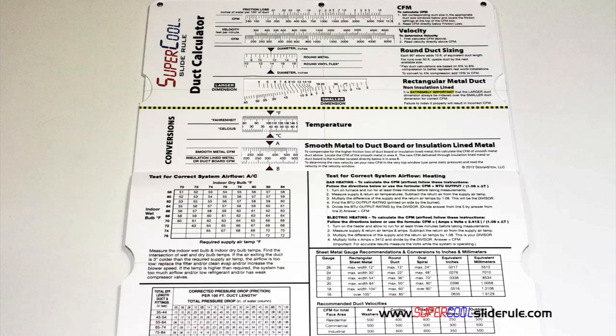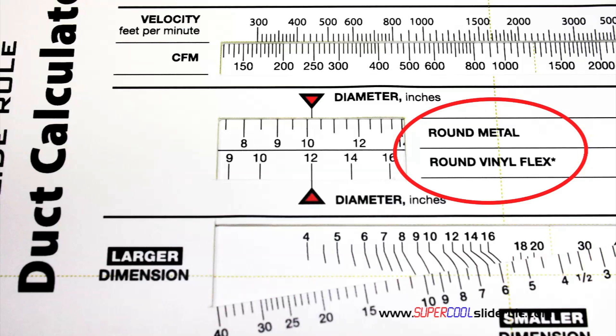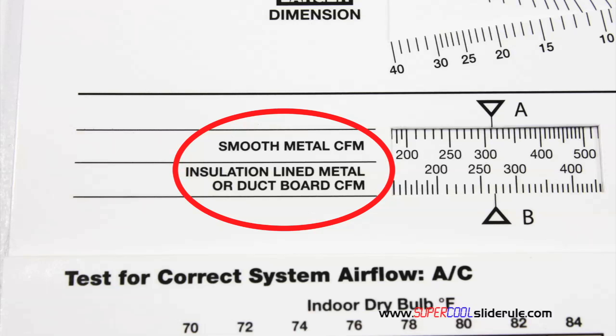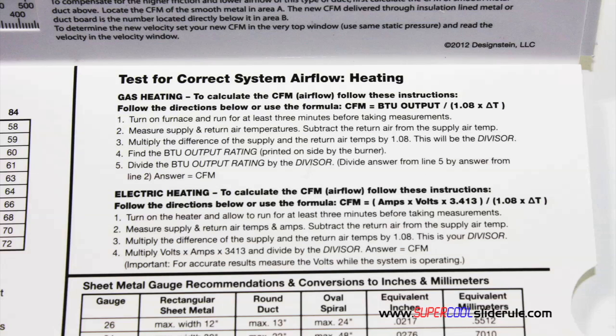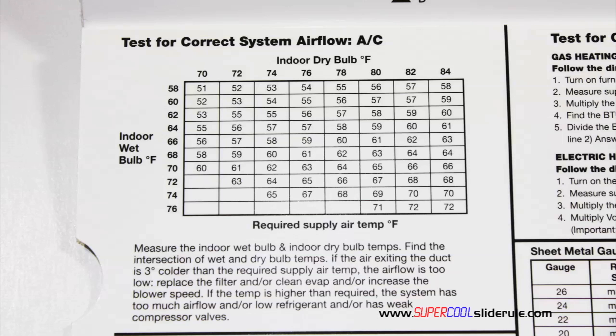Inside, it is packed with even more information. It performs sizing of both metal and flexible duct, and has the only direct reading conversion from smooth metal to insulation lined metal we've ever seen. The majority of technicians have never been taught that if the insulation is on the inside of the ductwork, you cannot size it with a regular duct calculator. It also has step-by-step directions for determining airflow through a gas furnace, electric furnace, or an air conditioning unit.